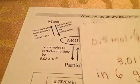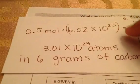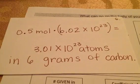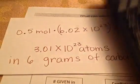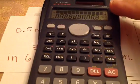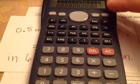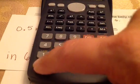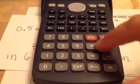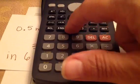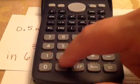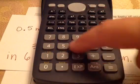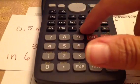So I have 0.5 times 6.02 times 10 to the 23rd. When I put that in my calculator, I put 6.02 times 10 to the 23rd in parentheses. I always put my scientific notations in parentheses so I don't make a mistake — it's especially important when you divide. So I enter 0.5, then times, open parentheses, 6.02 times 10, caret 23.